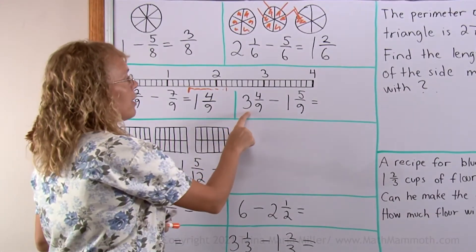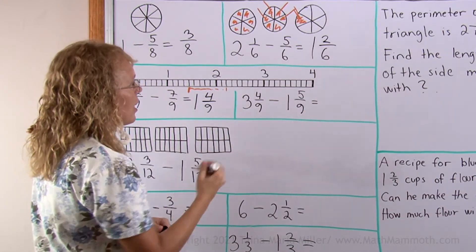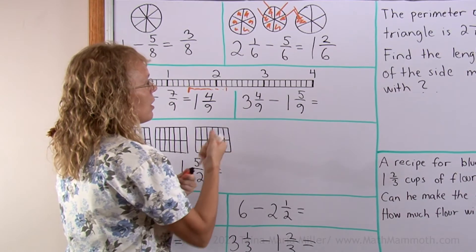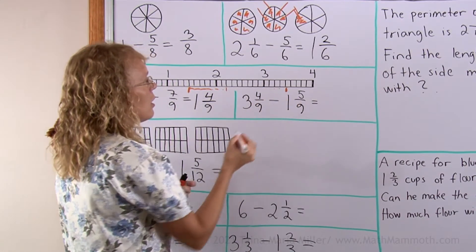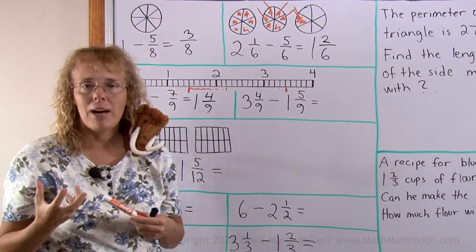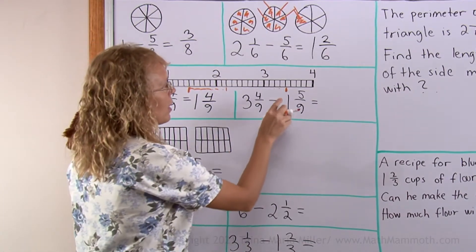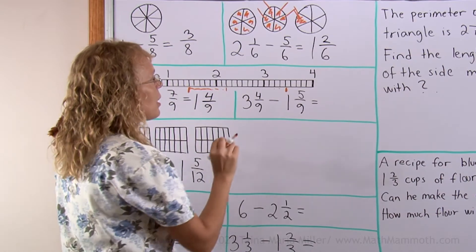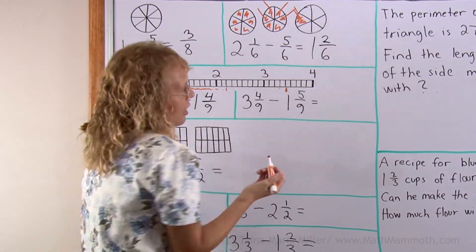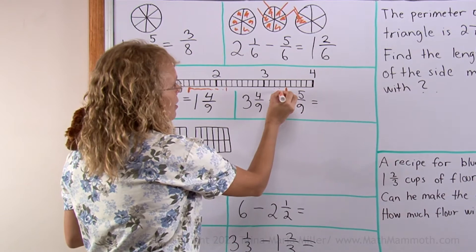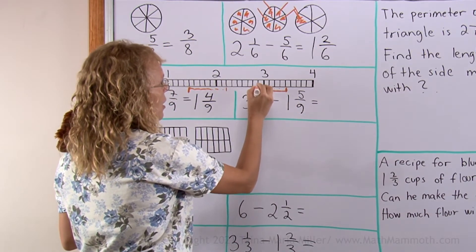3 and 4 ninths minus 1 and 5 ninths. Let's say I am here at 3 and then 4 ninths: 1, 2, 3, 4 — right there. If I want to take away 1 and 5 ninths, I need to go backwards that much. Let's say I first go backwards 5 ninths: 1, 2, 3, 4 and 5 ninths, at this line here.